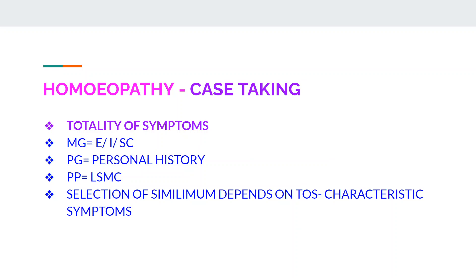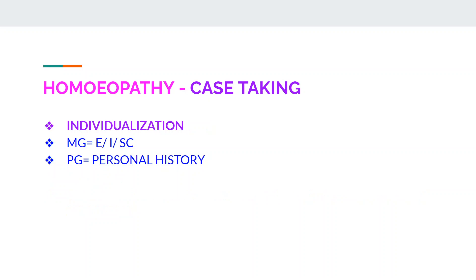Totality of symptoms is the collection of mental generals, physical generals, and physical particulars. Mental generals are symptoms of emotions (E), intellect (I), and subconscious (SC). Physical generals come from personal history. Physical particulars are recorded as LSMC — location, sensation, modality, and concomitant. Selection of the similimum depends on totality of symptoms, with the most important being characteristic symptoms. Individualization of the patient is done by giving importance to mental general and physical general symptoms, found in the patient's personal history.